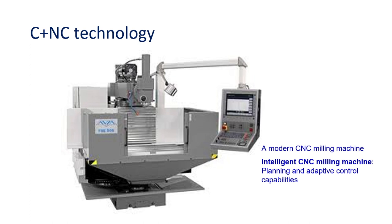One such CNC-based machine is shown here. This machine has a bed, a processing head, and a GUI — the interface of the machine with the user — which is a keypad through which the user controls or operates the machine tool. We will be studying some of these elements in the next few slides.